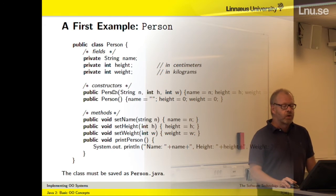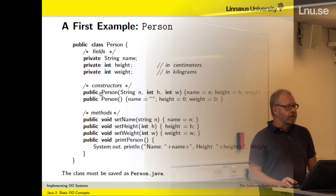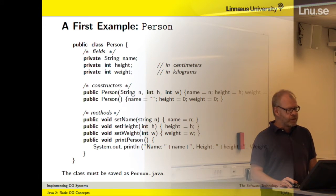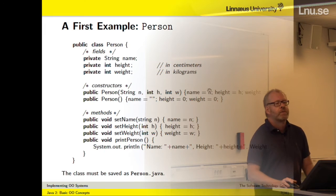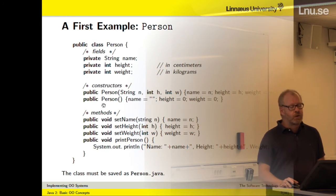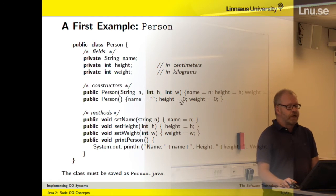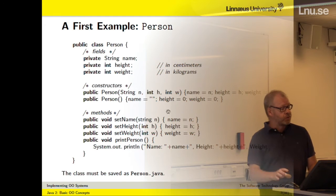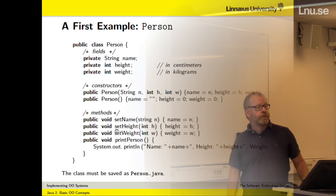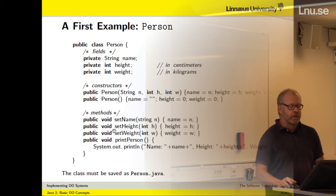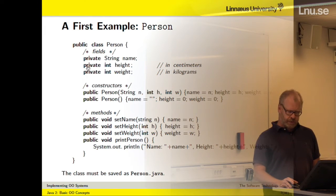The constructors are called to initialize this data. You are calling the constructor and providing a name, a height, and a weight. The input parameter n is assigned to the name, h to the height, and so forth. I also have a default constructor where I give them nonsense values to start with. I can later use the setName and setHeight methods to update them. The syntax is: public class Person, then a number of fields, a number of constructors, and a number of methods.